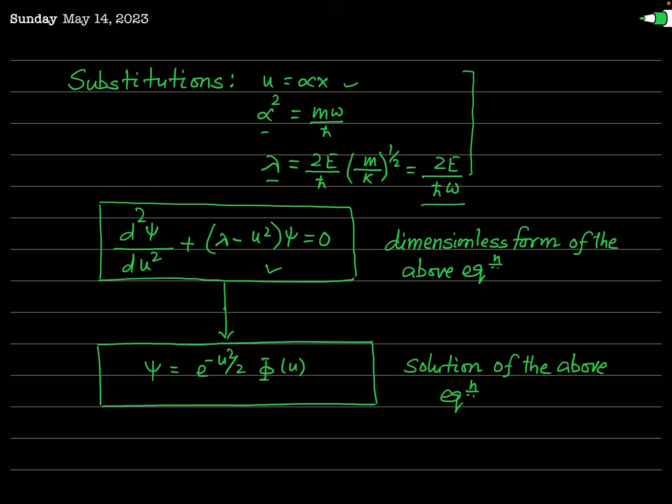When we make this substitution in the equation, it reduces to: d²ψ/du² + (λ − u²)ψ = 0. This is a dimensionless form of the above equation. The form of this standard differential equation suggests that its solution can be written as ψ = e^(−u²/2) · φ(u), where φ(u) is a function of u. The minus sign must be taken so that ψ remains well-defined — taking +u²/2 would make ψ diverge to infinity as u or x tends to infinity, which would not be a valid wave function.